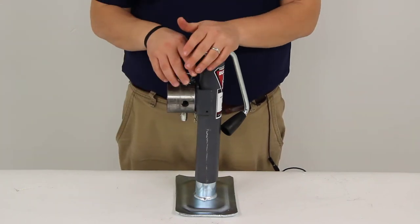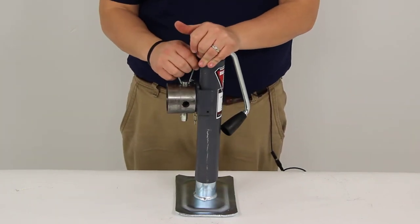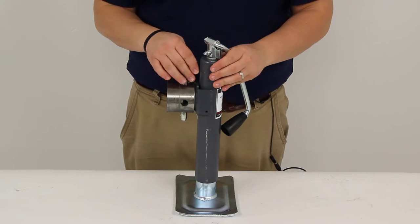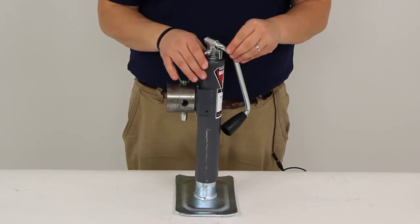Today we'll be reviewing part number BD198100. This is the Bulldog Trailer Jack rated at 7,000 pounds, provides 10 inches of lift and has a top wind handle.